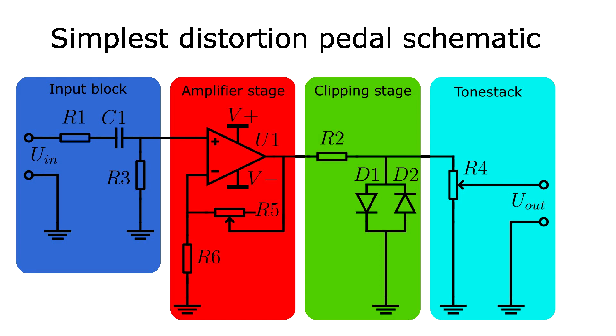Let's examine the simplest circuit which forms the core of the distortion effect. The circuit comprises four key blocks: the input block, an amplifier block, the clipping stage, and a tone stack, which in our case is simply a volume potentiometer.